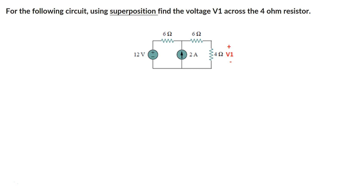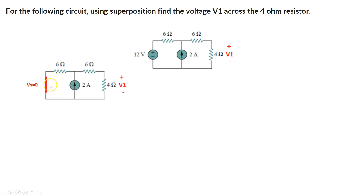First, we'll set the voltage source to be equal to zero. When you set the voltage source to zero, you're saying that the voltage across those two points is identical — the potential difference between those nodes is zero. Setting or killing the voltage source essentially results in a short across the terminals of this voltage source.